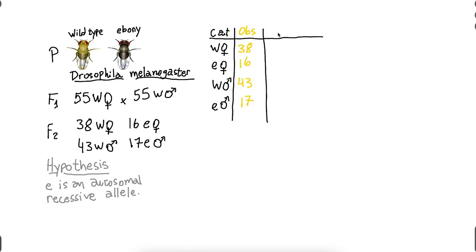Now, I need my expected values, but what should I expect in this situation? Well, if e is an autosomal recessive allele, then I expect the heterozygous to look like this. Right? So three-fourths, 75%, I would expect to be dominant, and 25% I expect to be recessive.